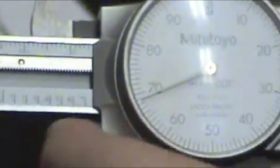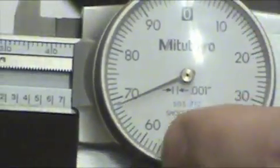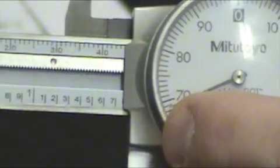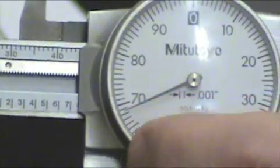Then we read the smaller unit that you see, seven hundred. And then you read your dial, sixty-nine. One inch, seven hundred, sixty-nine thousandths.